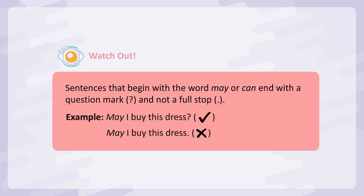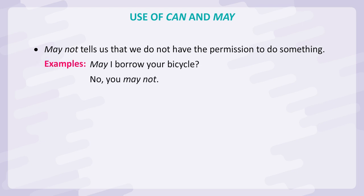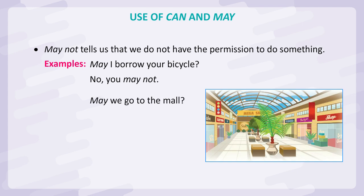Correct: May I buy this dress? Wrong: May I buy this dress. May not tells us that we do not have the permission to do something. Examples: May I borrow your bicycle? No, you may not. May we go to the mall? No, you may not.